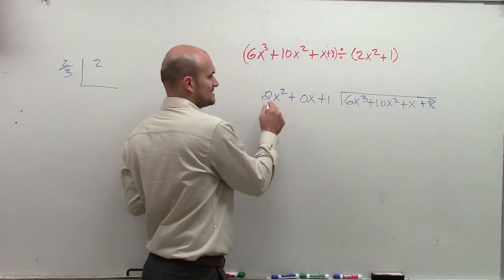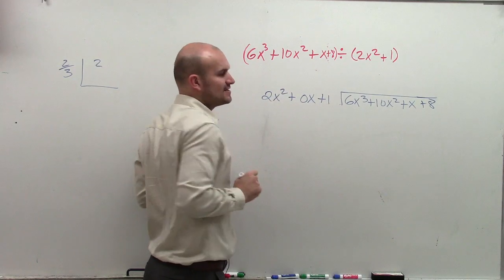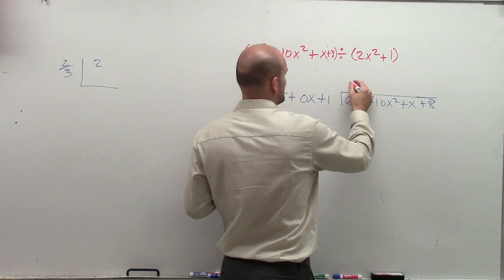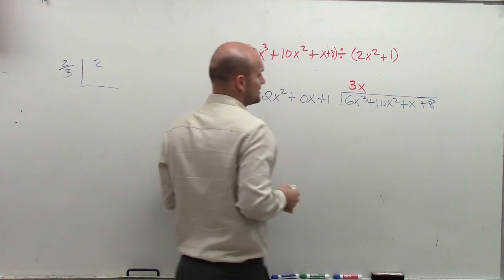So let's take a look at 2x squared. Does that divide into 6x cubed? Yes, it does. It goes in there 3x times.